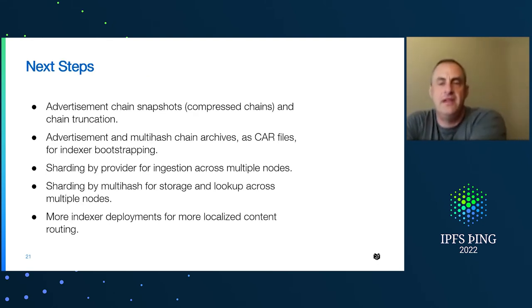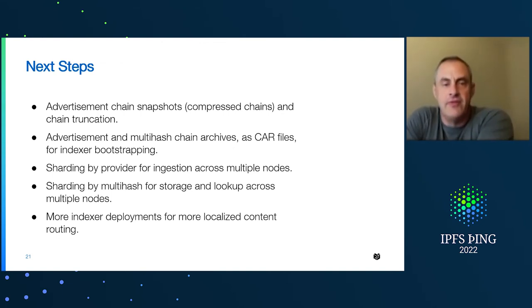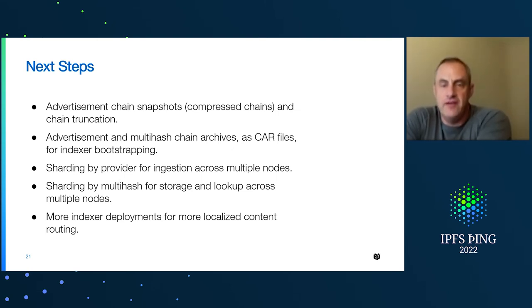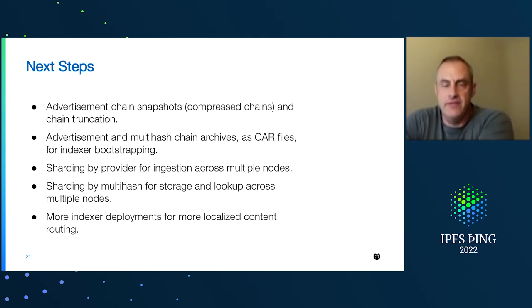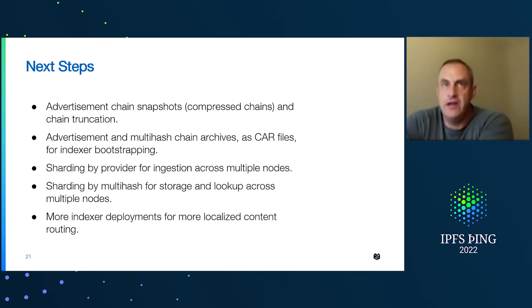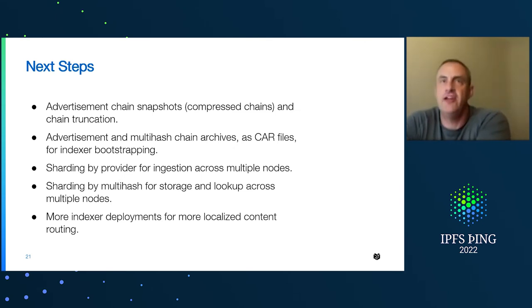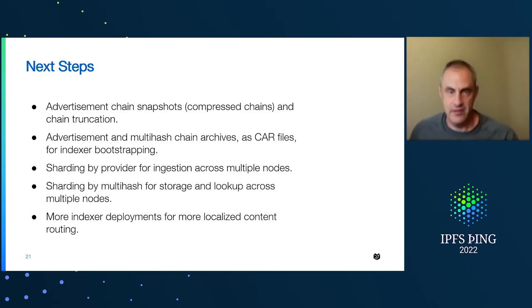For next steps in indexing: we're going to be doing advertisement chain snapshots, which is basically a mechanism of compressing advertisement chains. This means publishers can replace their chains with a very compressed form and eventually truncate those chains, so they don't have to keep data all the way back to the beginning of their existence. We can also archive chains using CAR files, which will allow us to bootstrap new indexers coming online — instead of reading from each provider directly and ingesting an entire chain, we can read from an archive available either from the provider or from a CDN.